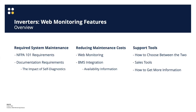We'll start by talking about required system maintenance — this is true not just for inverters but also for exit signs and emergency lights. We'll talk about NFPA 101 the Life Safety Code and what it requires the facilities team to do. We'll cover documentation requirements after testing is completed, the impact of self-diagnostics on those obligations, web monitoring, a new BMS integration feature, and support tools — including how to pick between web monitoring and BMS and when one may be preferable over the other in certain applications.